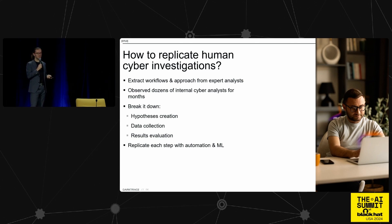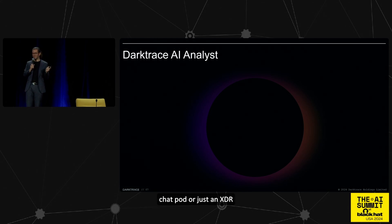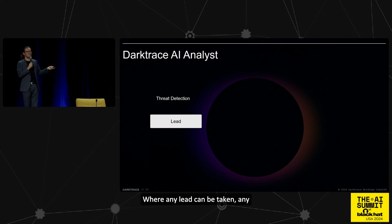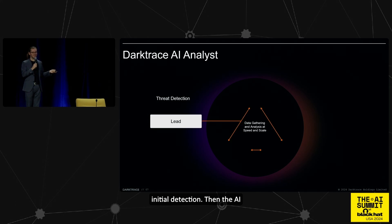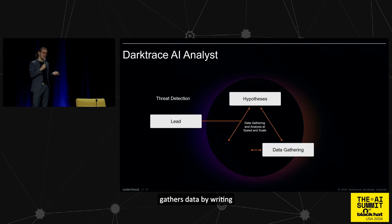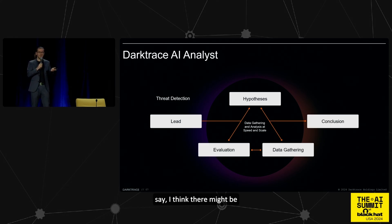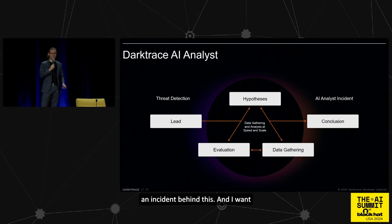We want to replicate each of these steps with machine learning and automation, and this led us to what we call an AI analyst. This is not a general chatbot or just a next-token predictor — any lead, any initial detection, can be taken by the AI analyst, which then does what a human would do: it creates hypotheses, gathers data by writing context-based queries by itself, evaluates the data, and finally comes to conclusions about whether there might be an incident behind it.